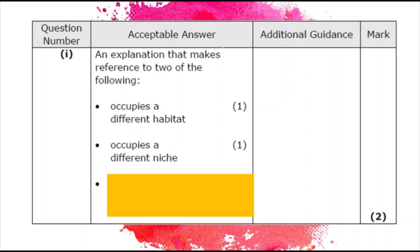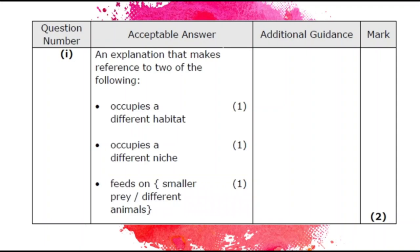The Iberian lynx is not in competition with the Eurasian lynx because it occupies a different habitat and a different niche. You could explain further that they feed on different animals — one feeds on smaller prey. Simply saying one is bigger than the other does not earn a mark; you must link size to the fact that they hunt different-sized animals.